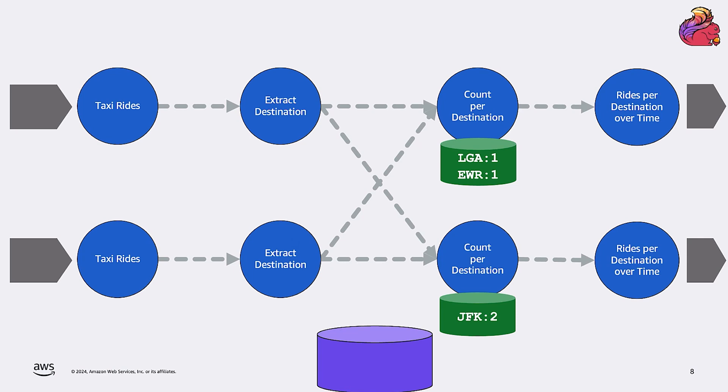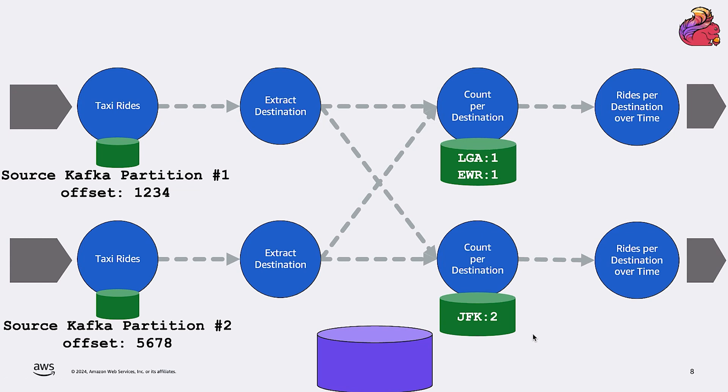But to provide exactly once consistency guarantees, just copying the state of the stateful operators, or the trip counts in our case, is not really sufficient. Because the application also has some hidden state that has to be saved. In particular, Flink has to save the point the application is reading from the source system at the moment the checkpoint was taken. If we are reading from a Kafka topic, for example, these pointers are the offset of the partition. And we also need to save the partition assignment to each subtask to be able to restore the application exactly as it was at the checkpoint.